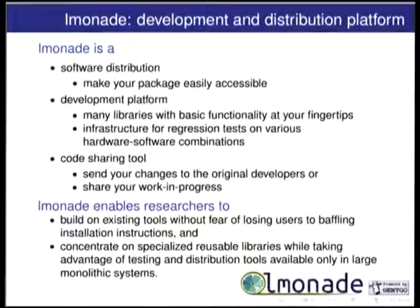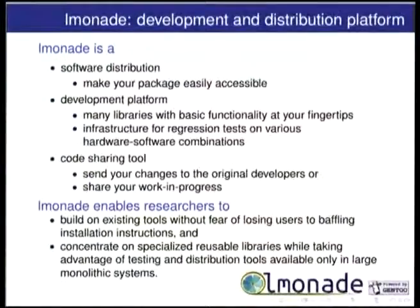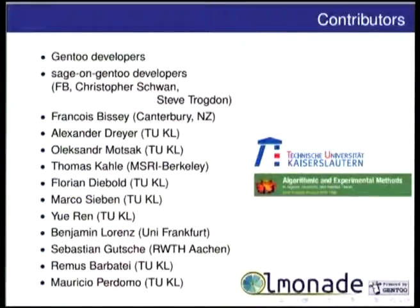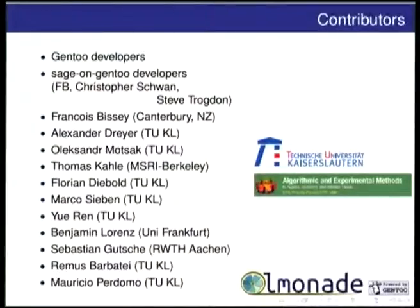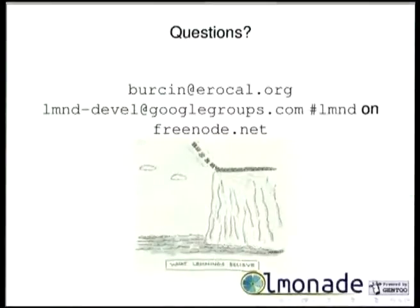Lemonade enables researchers to build on existing tools without fear of losing users to baffling installation instructions, and to concentrate on specialized reusable libraries while taking advantage of testing and distribution tools previously available only in large monolithic systems like Sage. The Gen2 developers have done the most contribution. The Sage and Gentoo project wrote most of the packages, with Christopher Schwahn in Mines and Steve Trogton as main contributors, along with others from Kaiserslautern and other places.